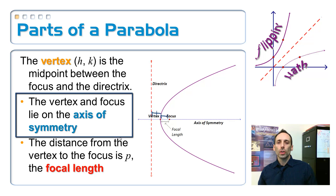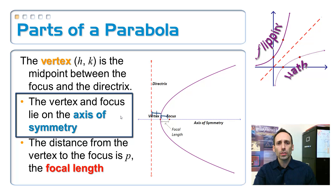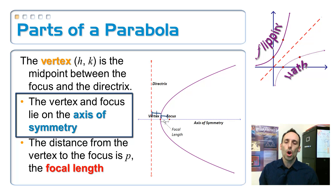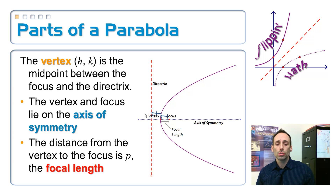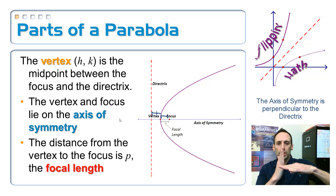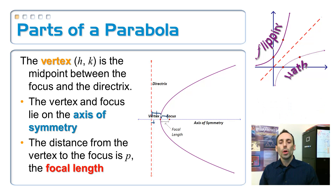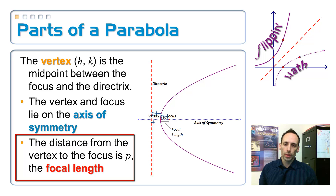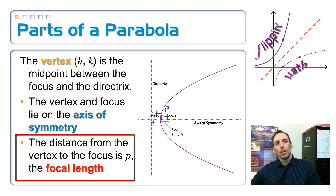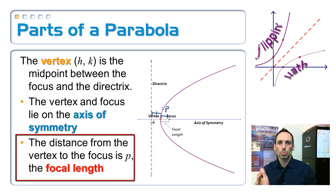The vertex and the focus are always on the axis of symmetry — this is an important thing to remember. What's the relationship between the axis of symmetry and the directrix? They're always perpendicular lines. And the focal length, which we're going to call P, is the distance from the vertex to the focus.